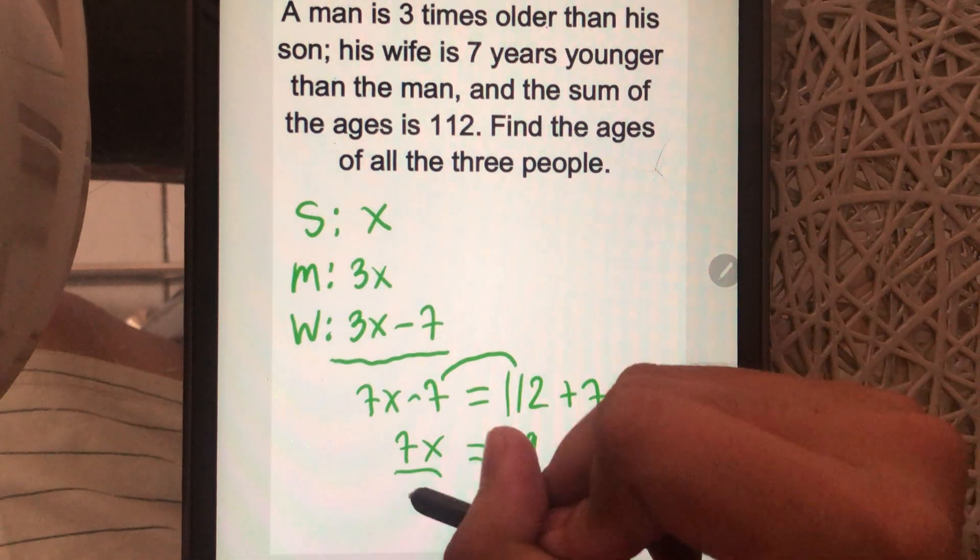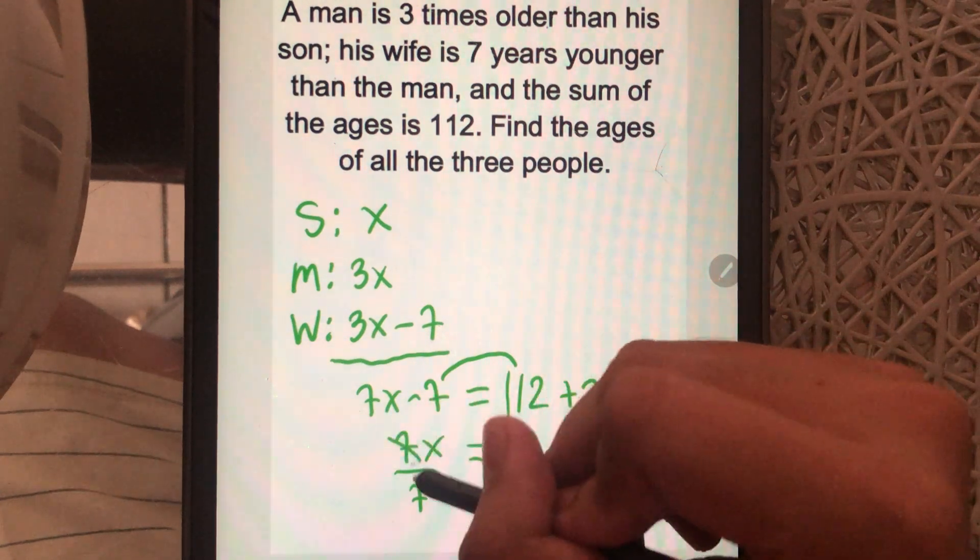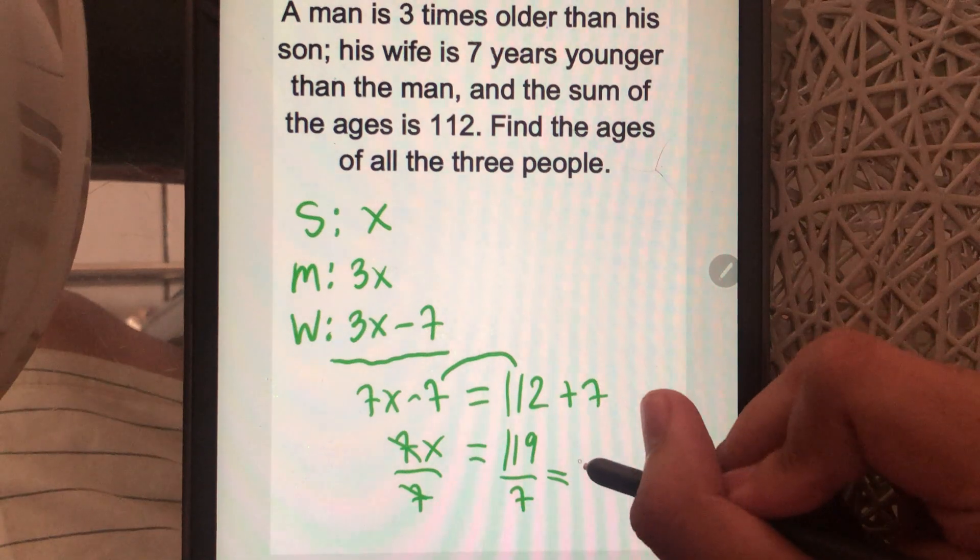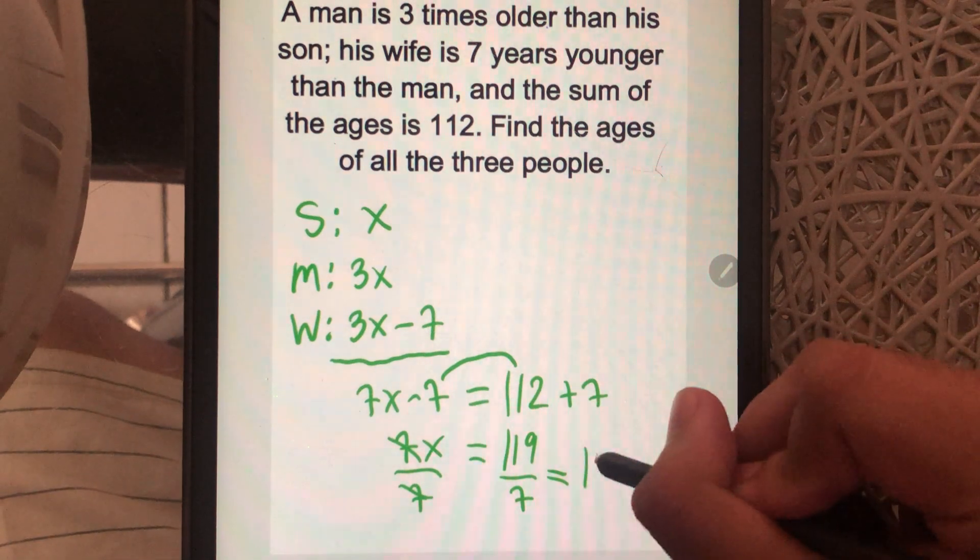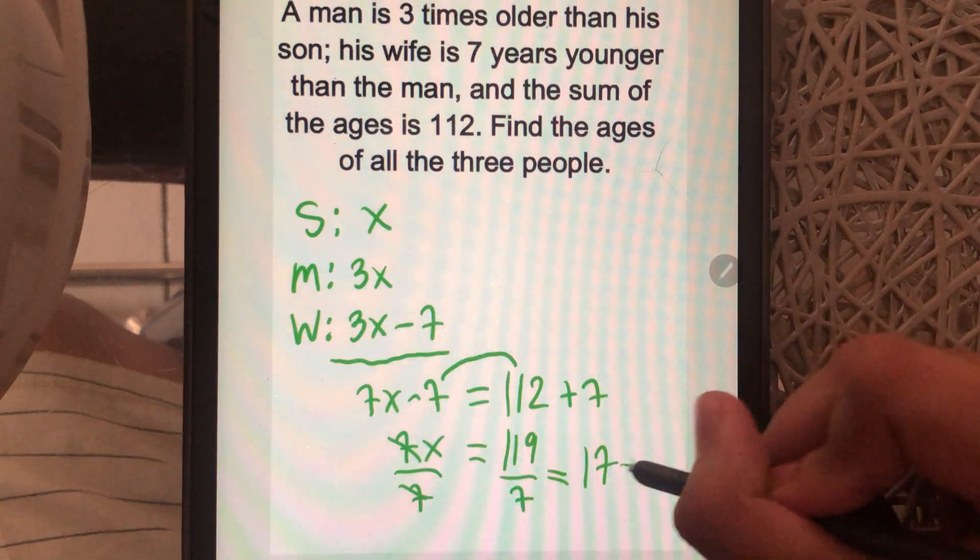Divide both sides by 7. Cancel out. 119 divided by 7 is equal to 17 equals our X.